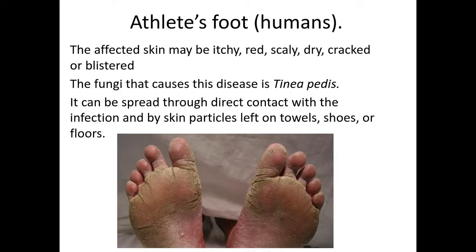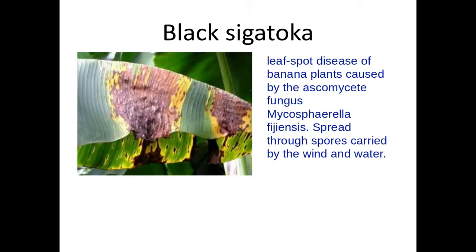Athlete's foot is also a fungus and is spread through direct contact or indirectly through towels, shoes, and floors. The spores are hard to get to the surface of the skin, which is why it becomes irritated and red. Black Sigatoka affects banana plants and is again a fungus, spread through spores carried by wind and water — so this is indirect transmission.